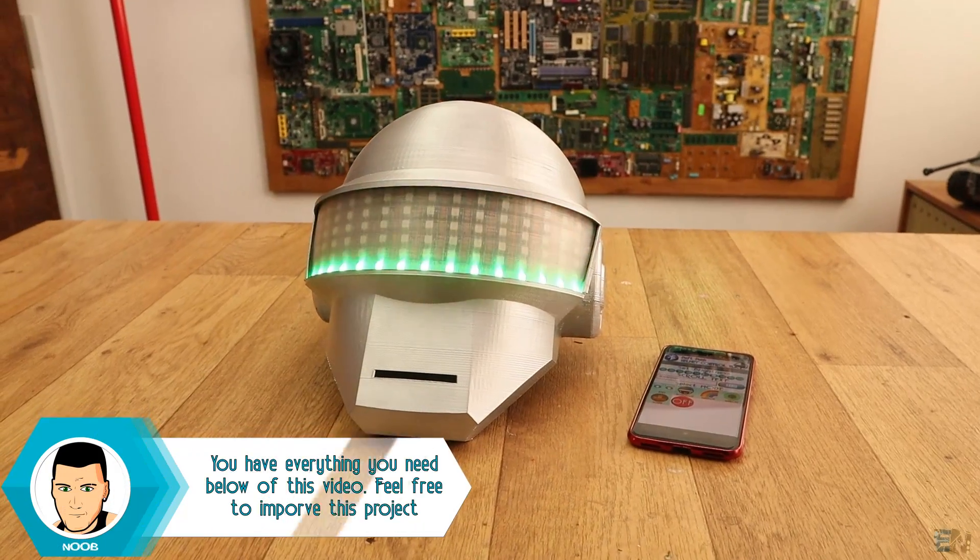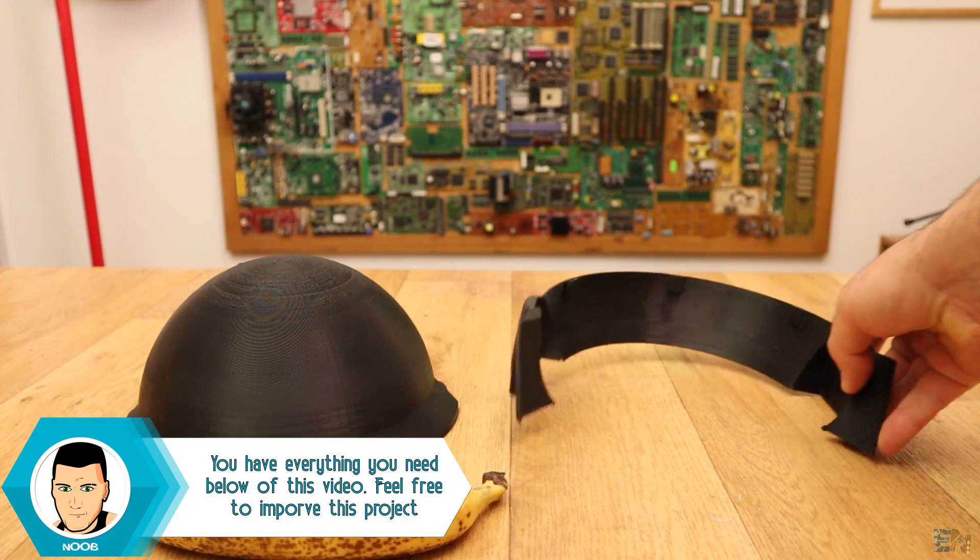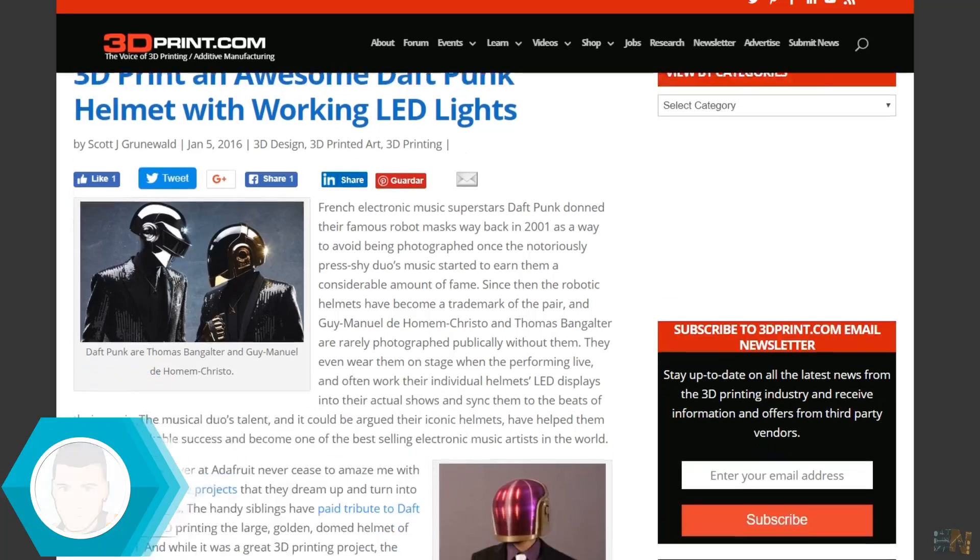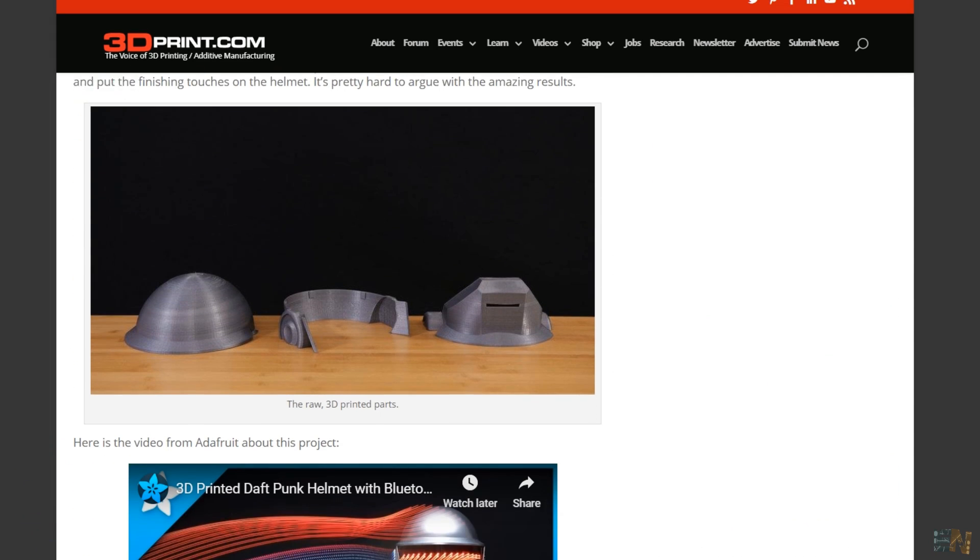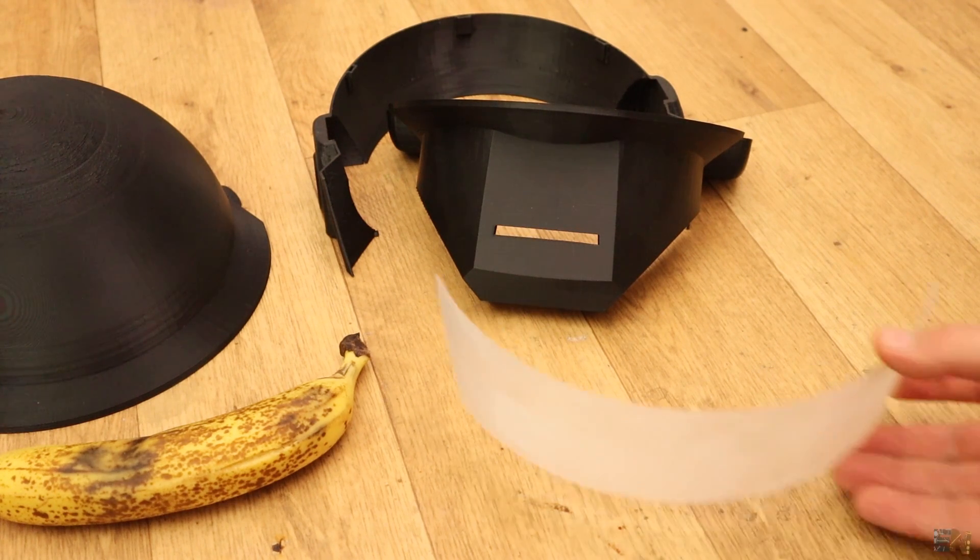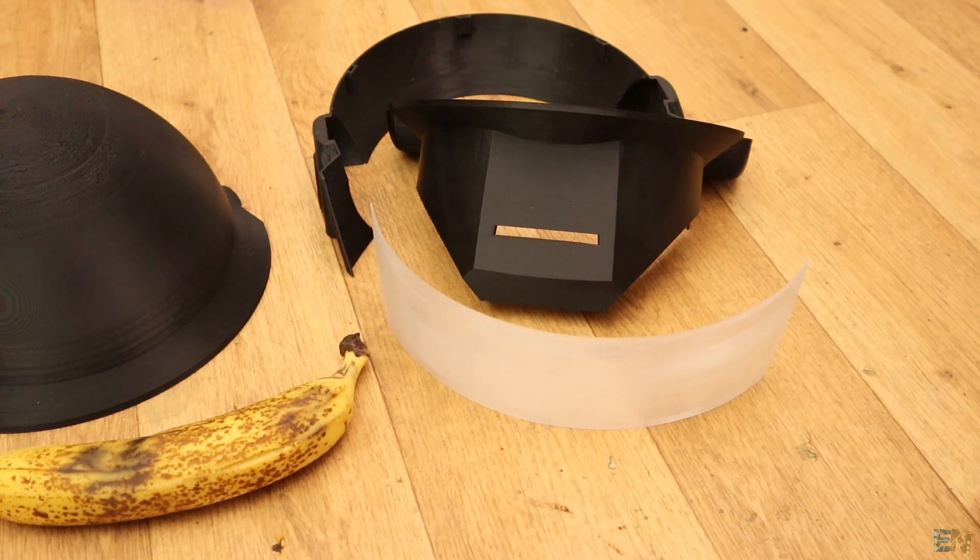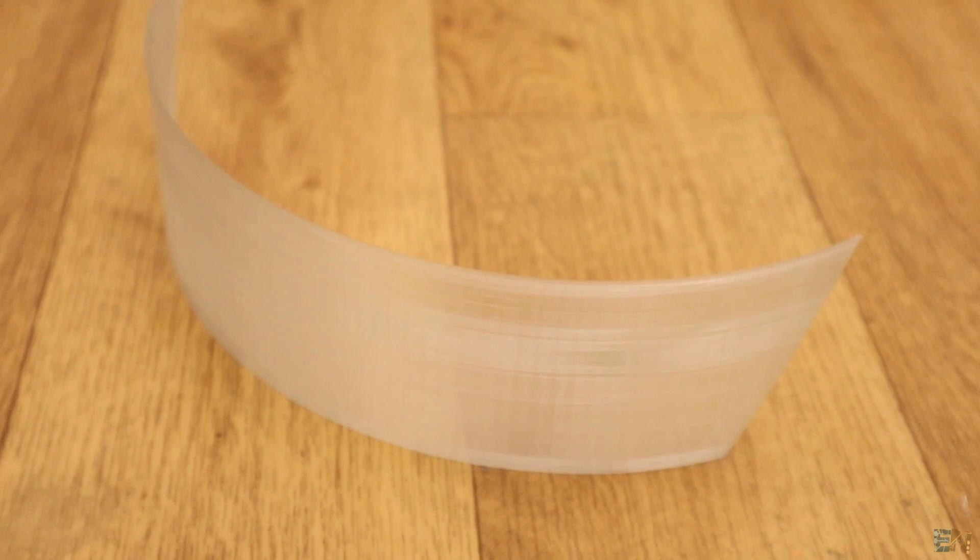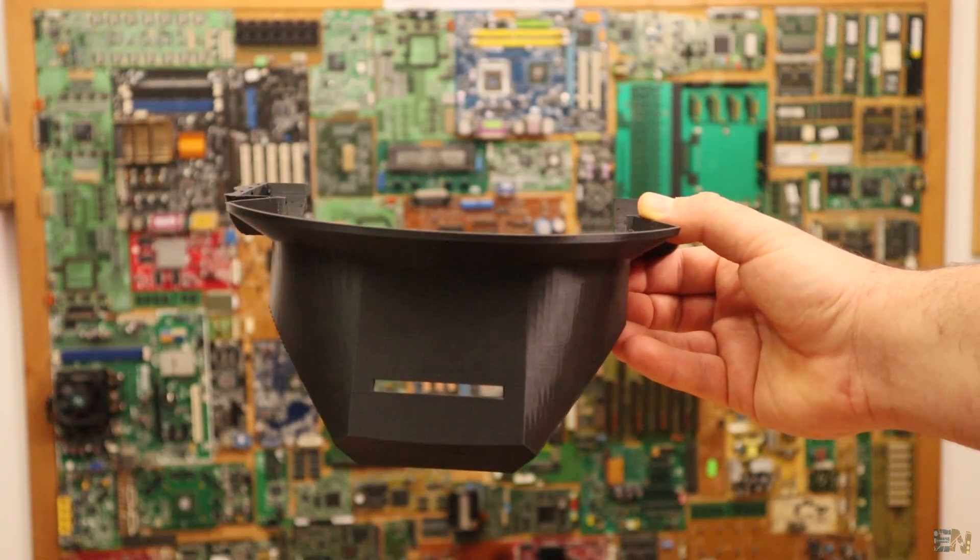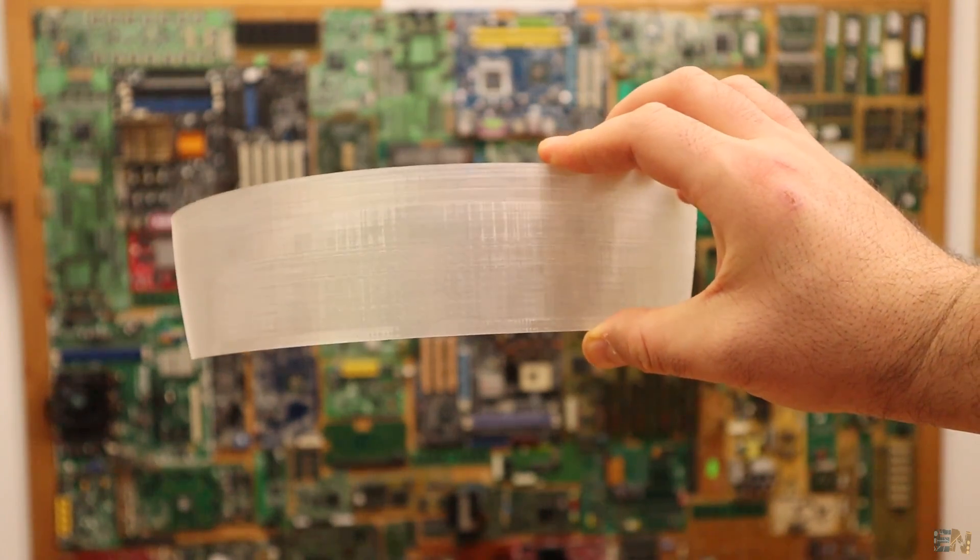The first thing we need for this project is the 3D printed helmet. For that I've downloaded the STL files from this site. Once again thanks to Ries Brothers for this design. The download link is below. The helmet is made out of 3 main parts and a visor that I've printed with transparent PLA and you need a big printer of more than 240 x 240 mm of printing area in order to be able to print these files.